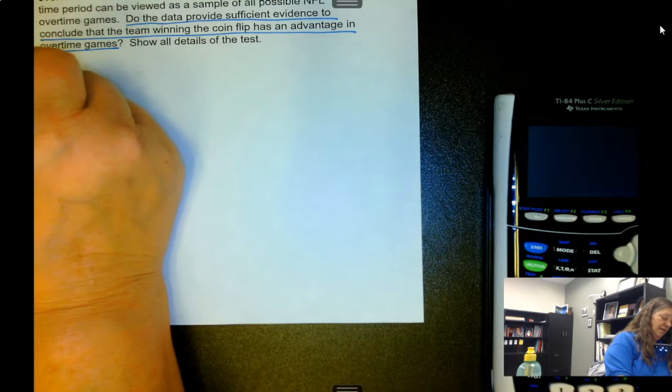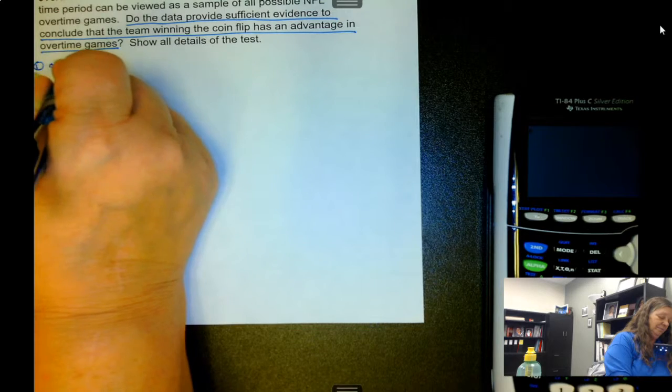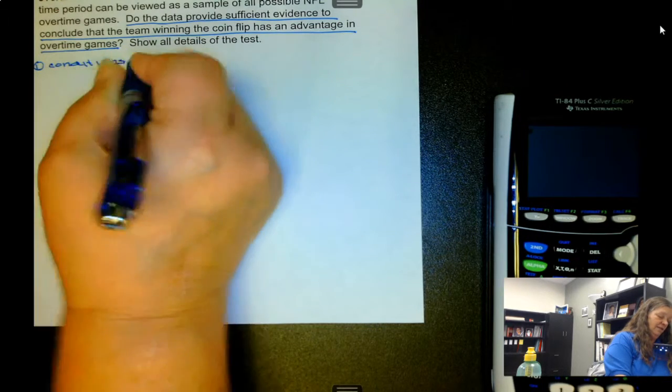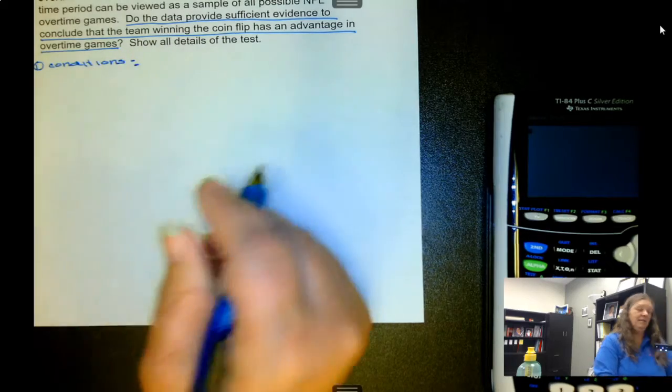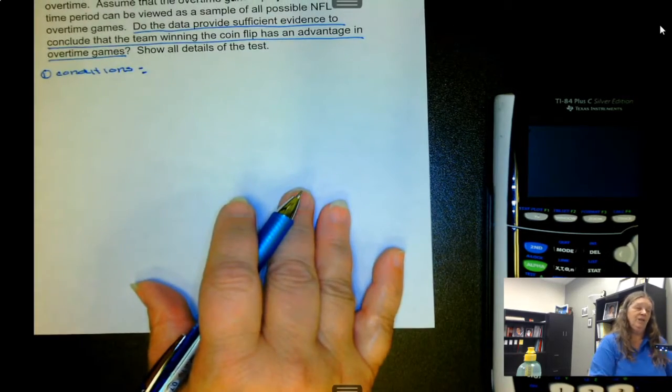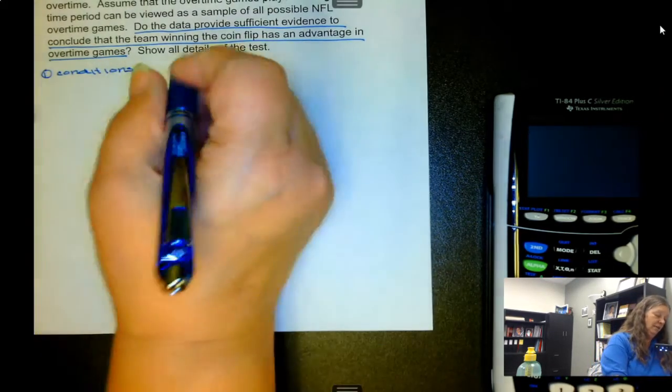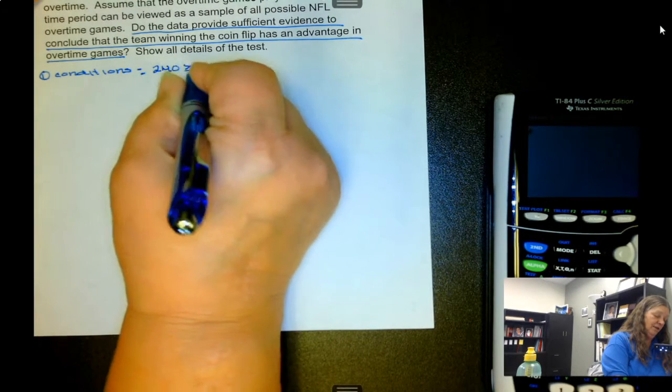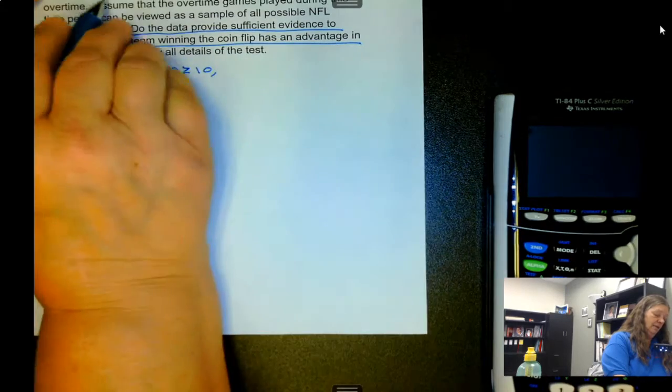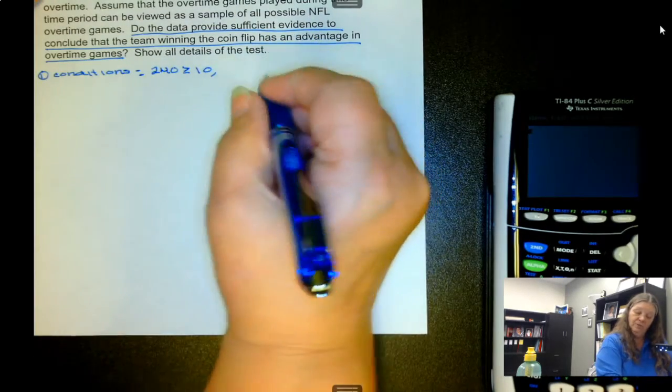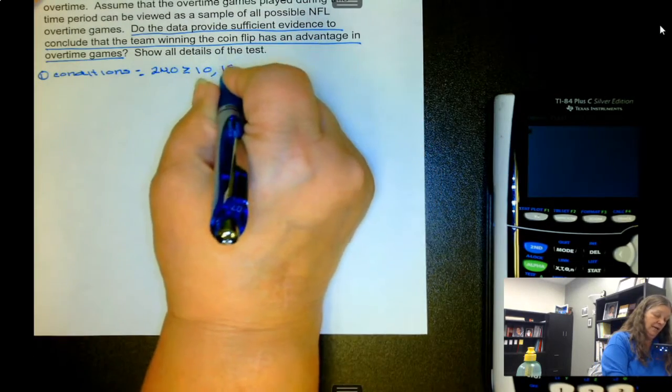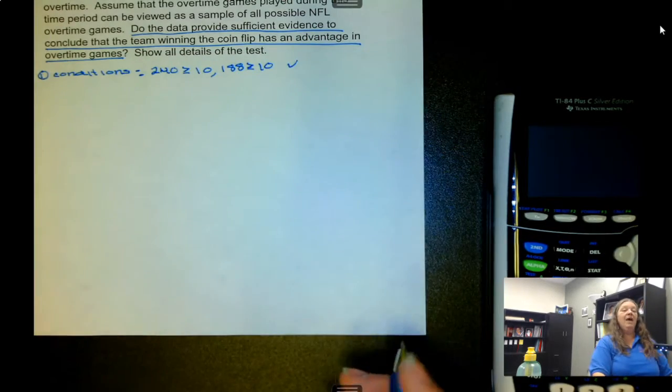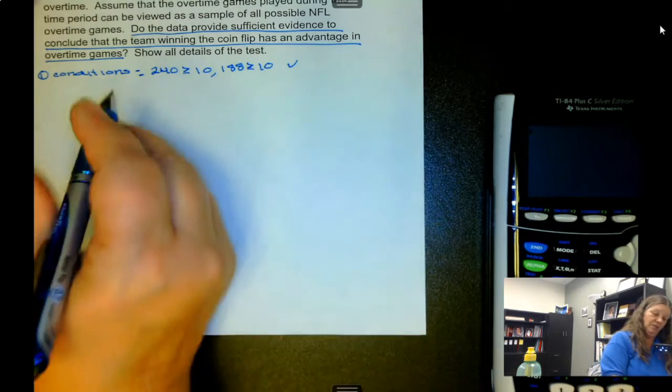First thing is conditions. n times p and n times 1 minus p need to be greater than or equal to 10. So 240 is greater than or equal to 10, and 428 minus 240, or 188, is greater than or equal to 10. So conditions are met to use a normal distribution.